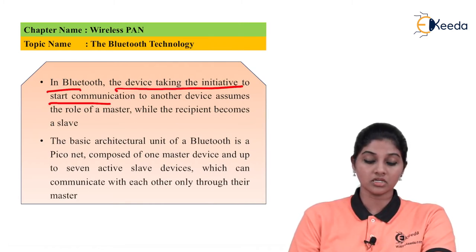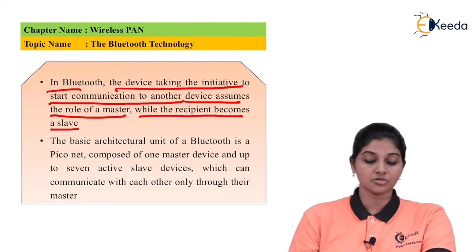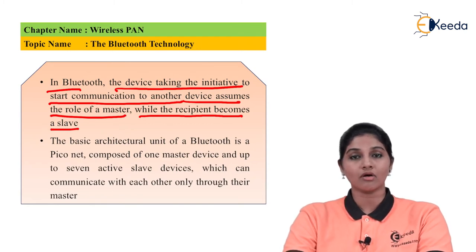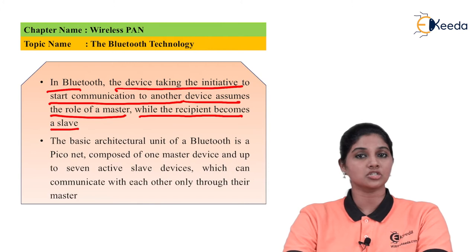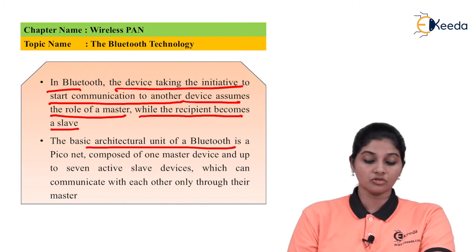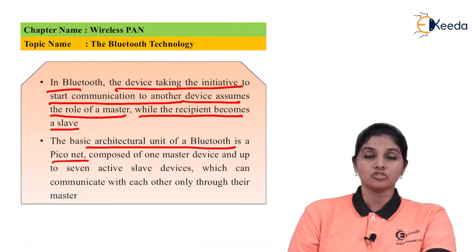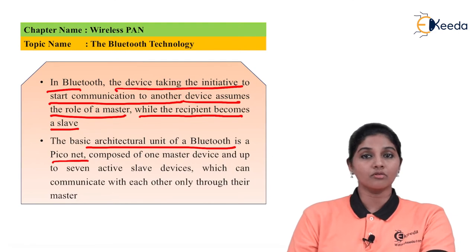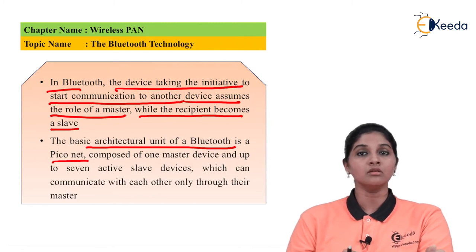In Bluetooth, the device that takes initiative to start communication assumes the role of master, while others become slaves. Bluetooth operates on a master-slave architecture where the transmitter or device that initiates communication acts as master and the receiving devices are called slaves. The basic architectural unit of Bluetooth is the Piconet — when two or more devices communicate using Bluetooth technology, they form a Piconet.